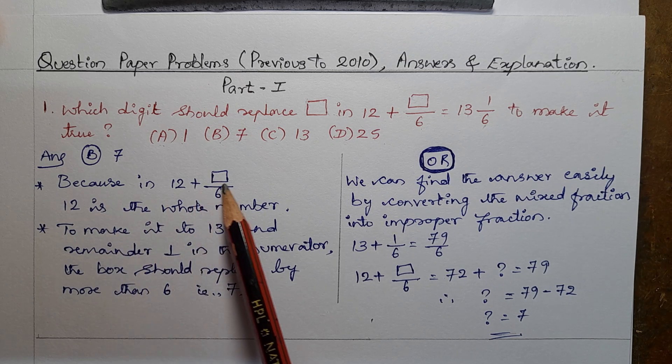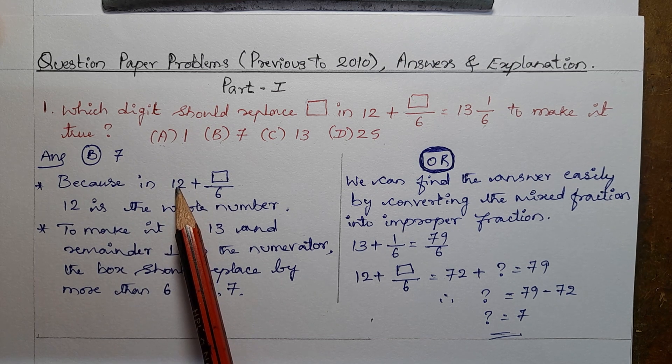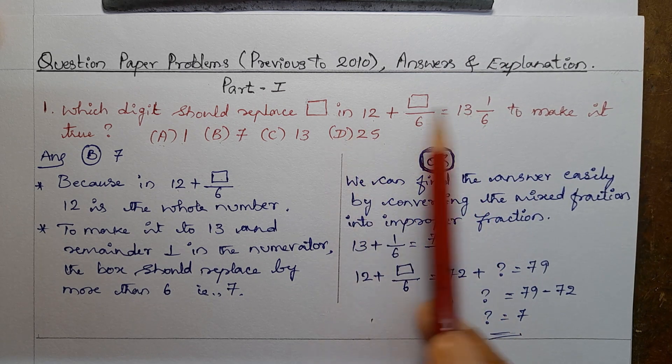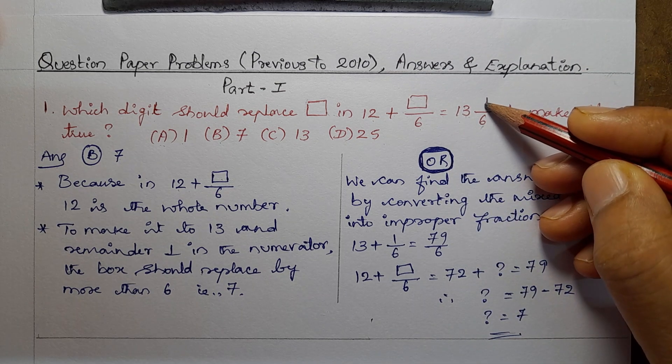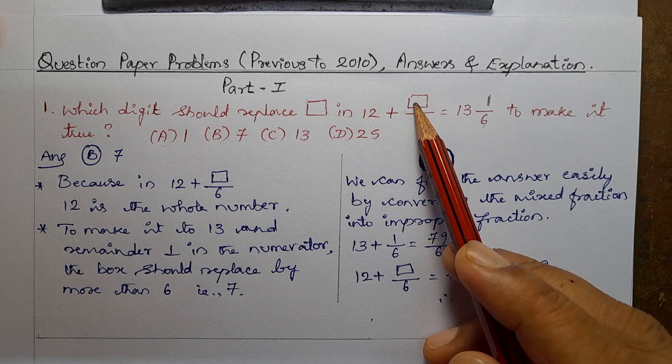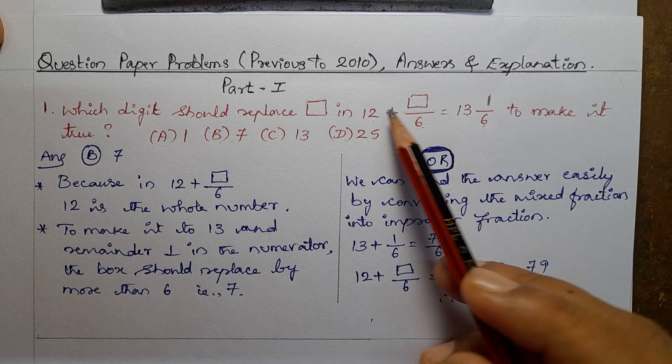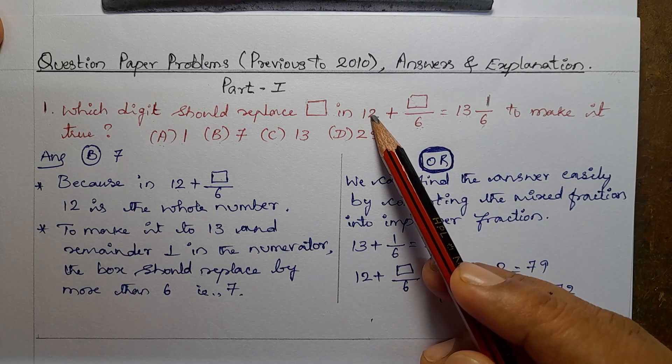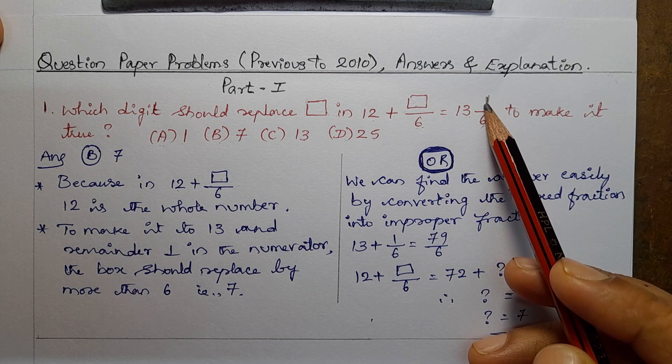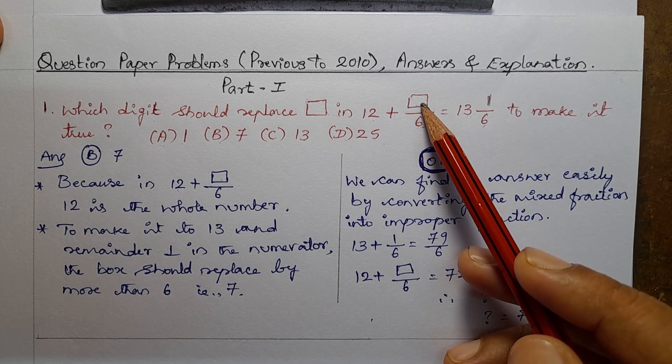Because in 12 plus this fill in the blank divided by 6, so 12 is the whole number. To make it to 13, and remainder 1 in the numerator, the box should replace by more than 6. That is 7.